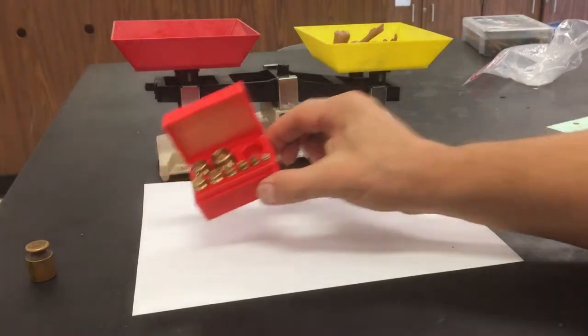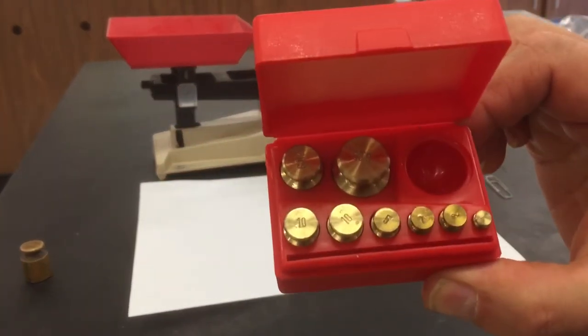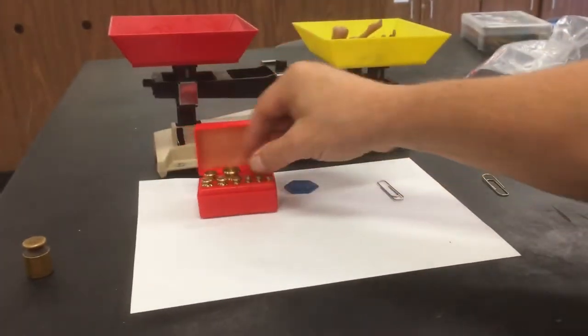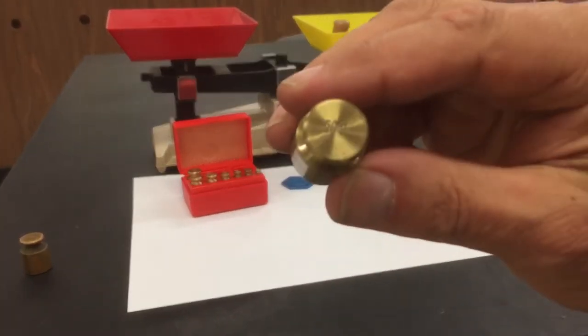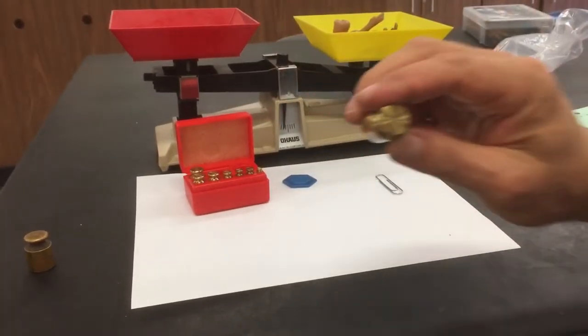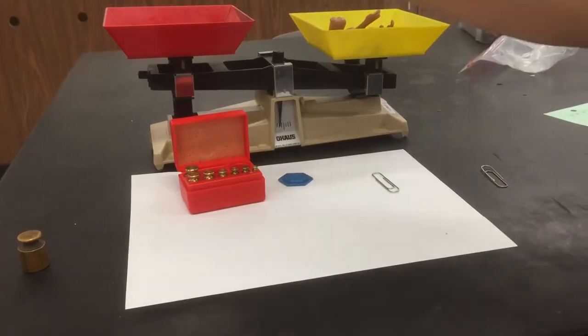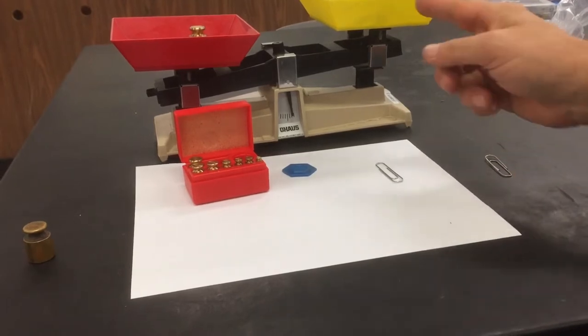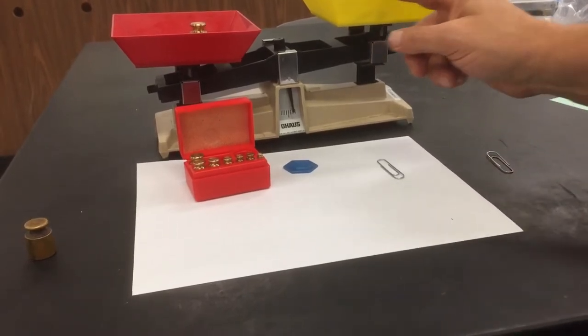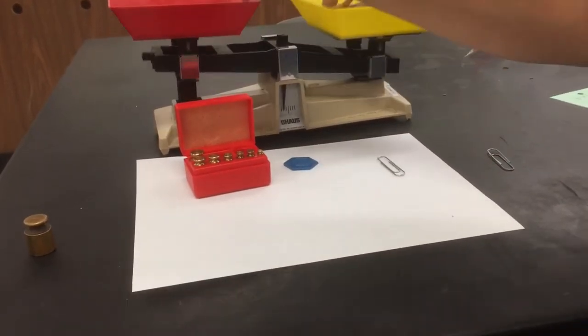Now we're going to take these. These are brass masses, and each of them has a gram value marked on them. So this one's a 50 gram mass. So I'm going to put it in the pan, and that's telling us that this guy is lighter than 50 grams. So I can't use 50 gram.